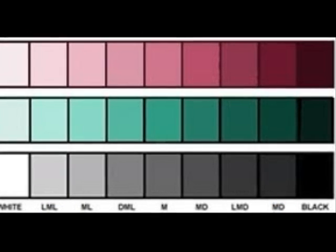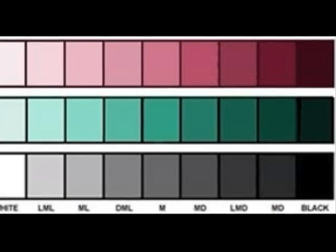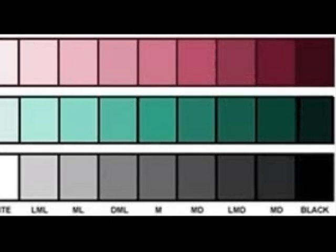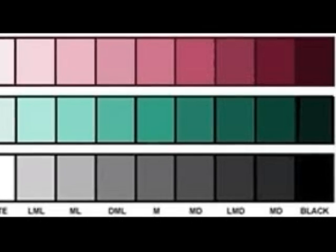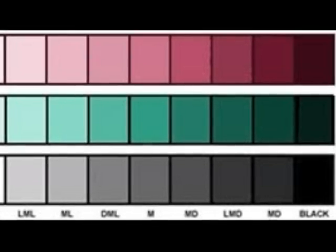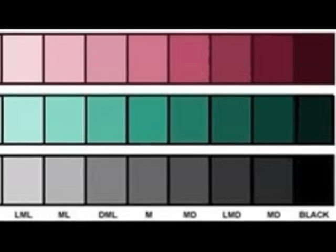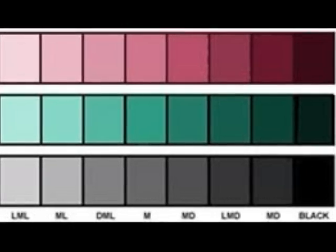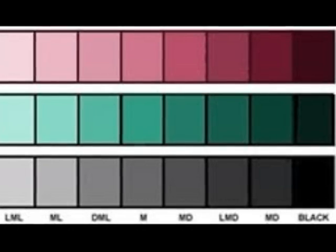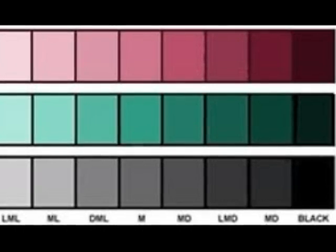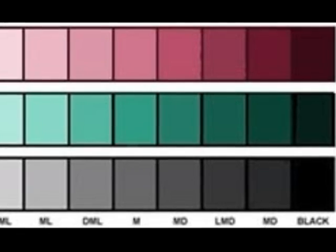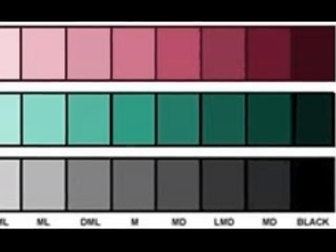Let's now take a look at the value scale. The value scale shows the contrast of a color from light to dark. All you have to do to make these changes is add either a little black or white to your color, each time you want to make it lighter or darker.